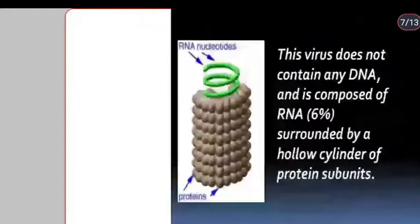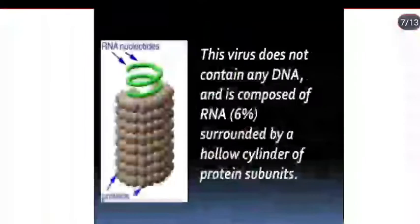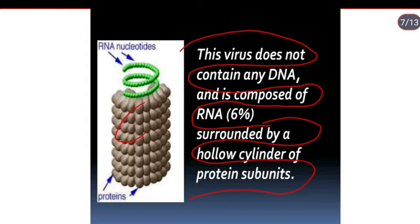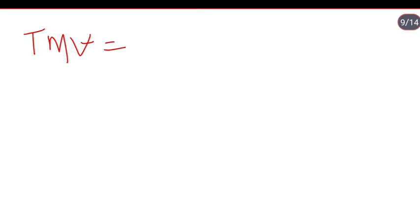These viruses contain RNA surrounded by a hollow cylinder of protein. The TMV virus infects tobacco plants and causes mosaic patterns on the leaves, creating characteristic symptoms on infected plants.